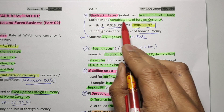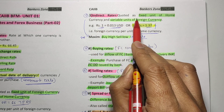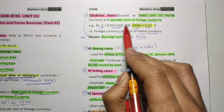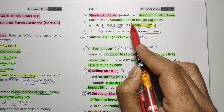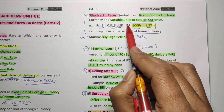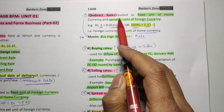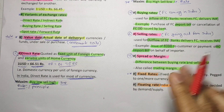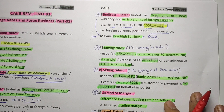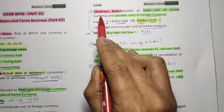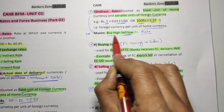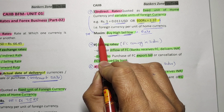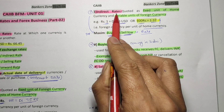In direct rate: one dollar equals 75 rupees. In indirect rate: one rupee equals 0.13 dollar. Just remember direct and you can easily remember indirect. In a direct quote, the rule is buy low and sell high. In indirect rate, it is just the vice versa — in indirect, we sell at low and buy at high. So in indirect rate, buy high and sell low is the principle.